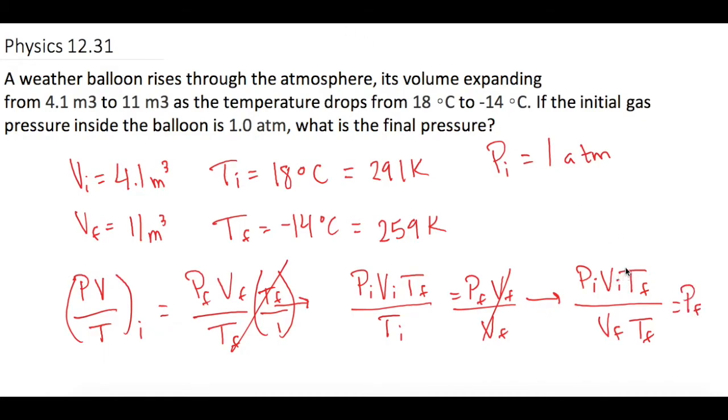So if you notice, the units for volume are both going to cancel each other out, and the units for temperature are both going to cancel each other out. Whatever units we put in for this pressure is what the equation will give us out. Since Mastering Physics wants atmospheres, let's just leave it as atmospheres and it'll make the math easier.